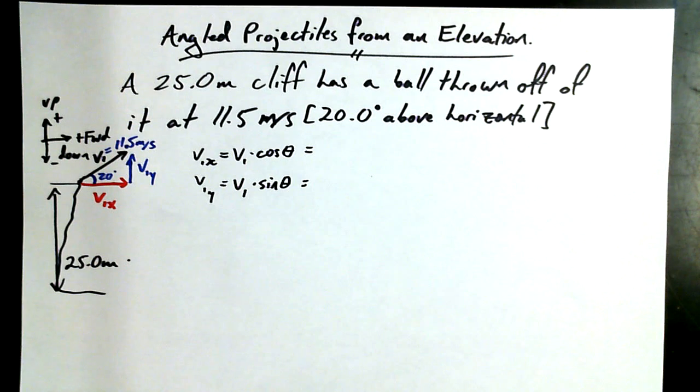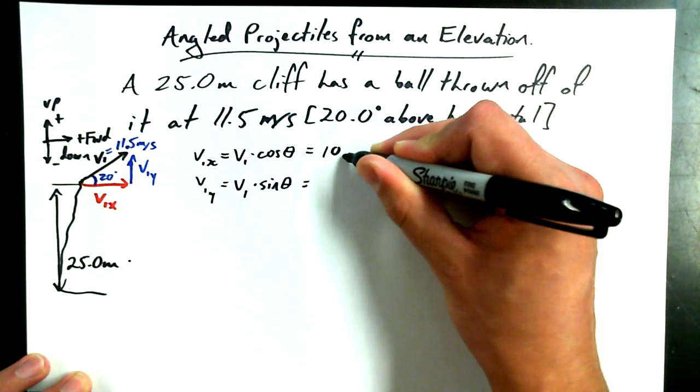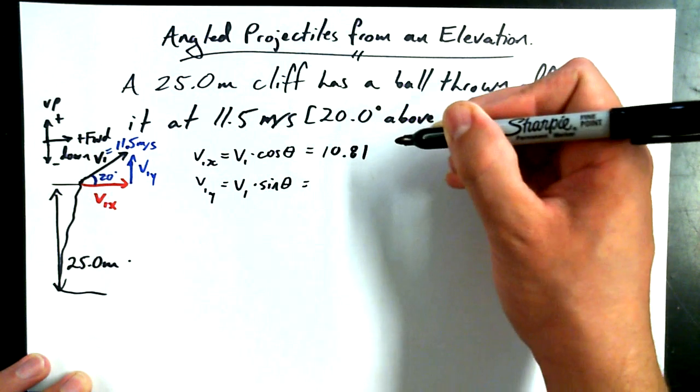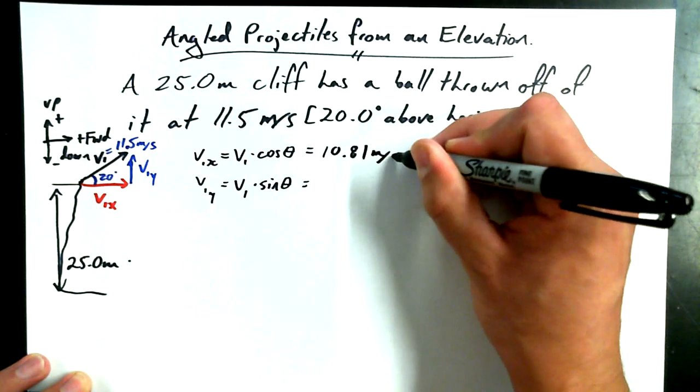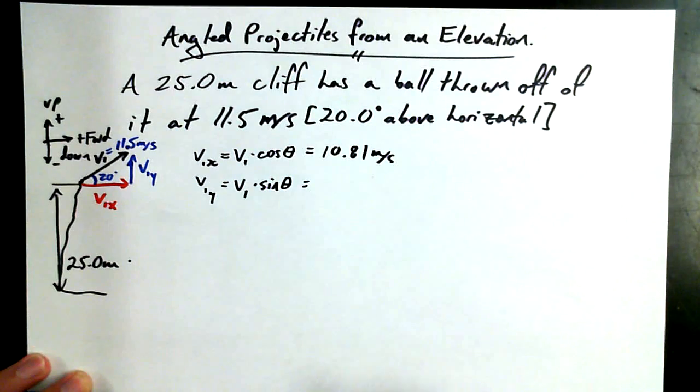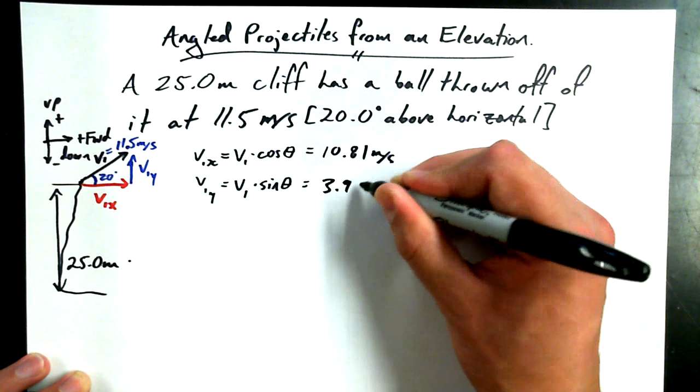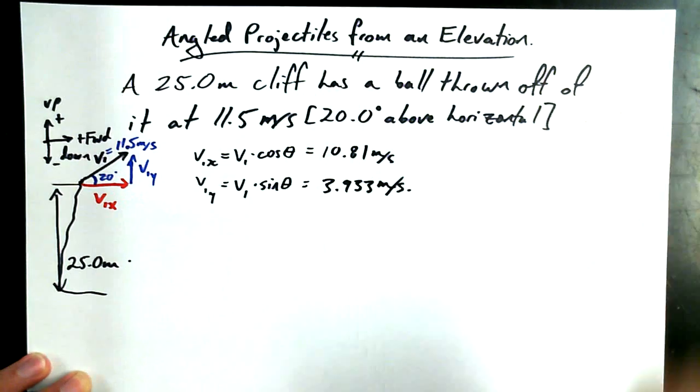Who's got V1x? 10.8. Do you have it any more accurate than that? 10.81 then, okay. Meters per second. V1y? 3.933. There's more. You don't need it. Meters per second. I like it.